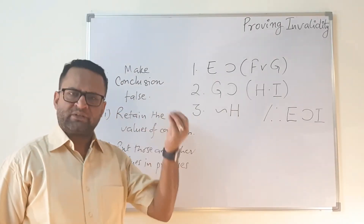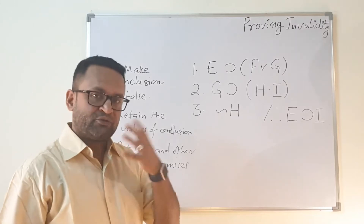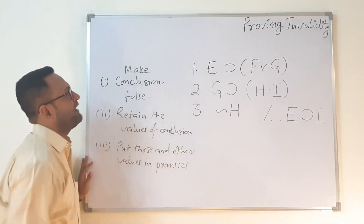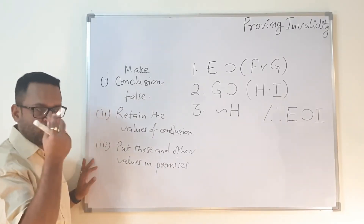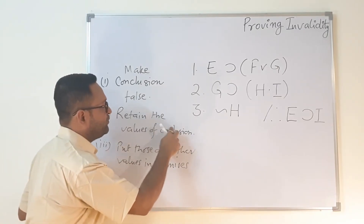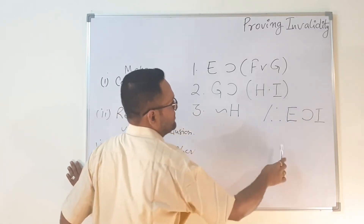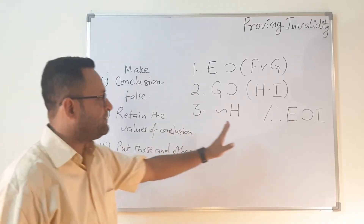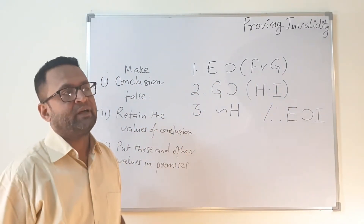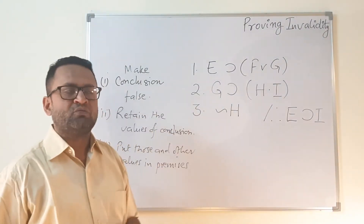Your approach should be: first make the conclusion false; second, retain whatever values you used in the conclusion — those must be kept; third, use those retained values in the premises and freely assign the remaining variables. In this question the variables are E, I, F, G, and H — only these five values need to be determined.